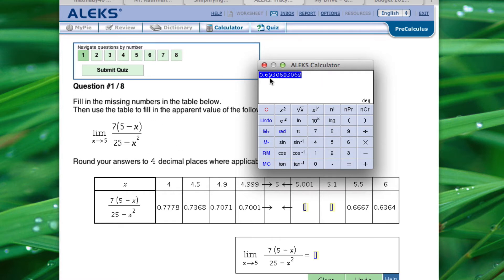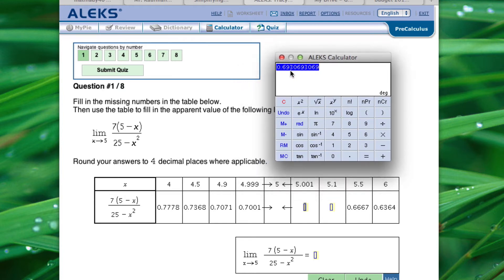And we get .693069 and it continues. So we want to round this to the nearest four decimal places. So we're going to say that's .6931, 0.6931.